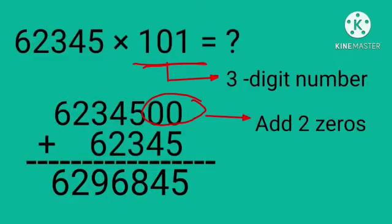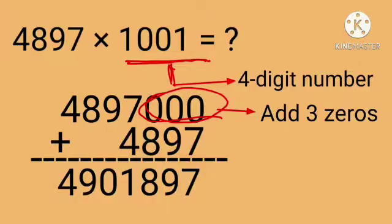How to multiply 62,345 by 101: add two zeros to the right of 62,345, then add the given number and the number formed after adding zeros to get the answer. How to multiply 4,897 by 1,001: